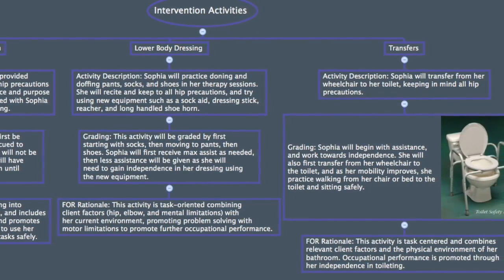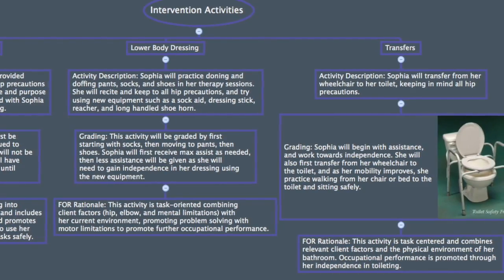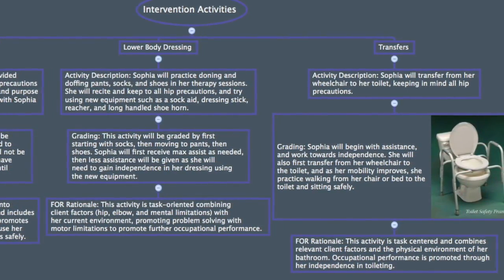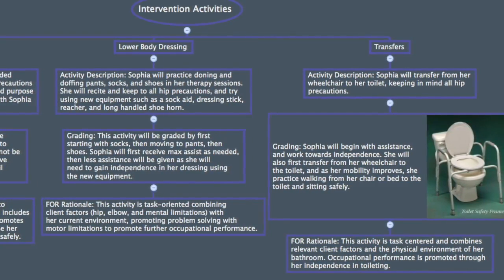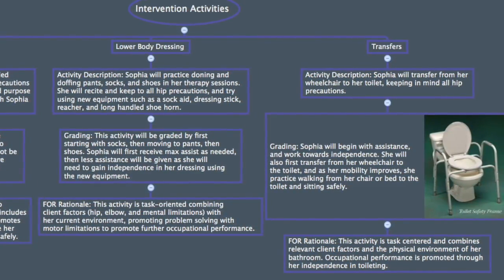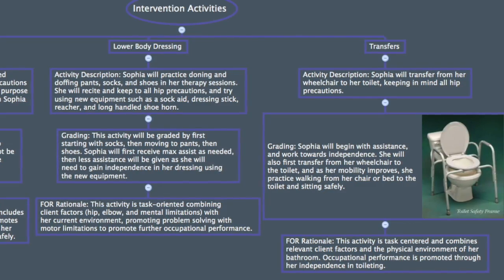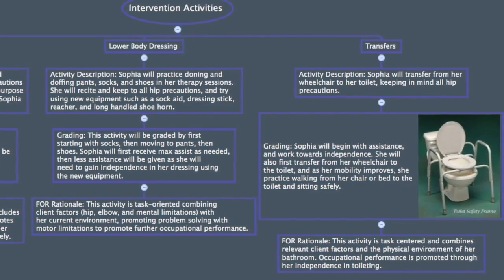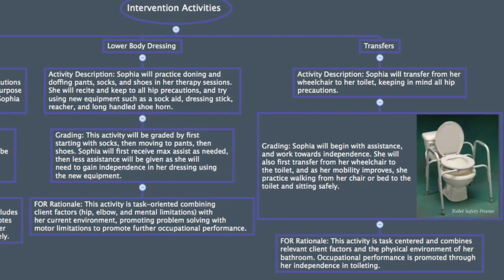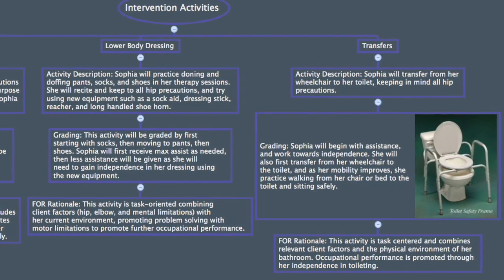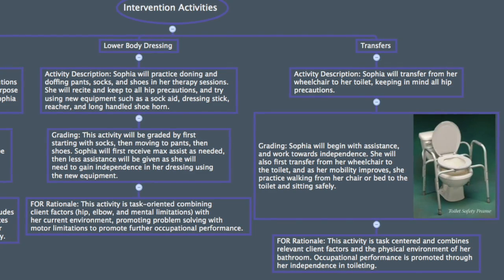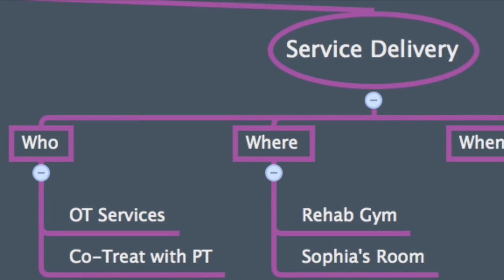Her last initial intervention activity will be working on transferring from her wheelchair to the toilet, adhering to all hip precautions at all times. Sophia will begin transferring with assistance, and as she progresses, she will transfer not directly from her wheelchair but will walk to the toilet using her walker. This activity is task-centered and combines relevant client factors, promoting occupational performance and independence in toileting, keeping to the task-oriented frame of reference.